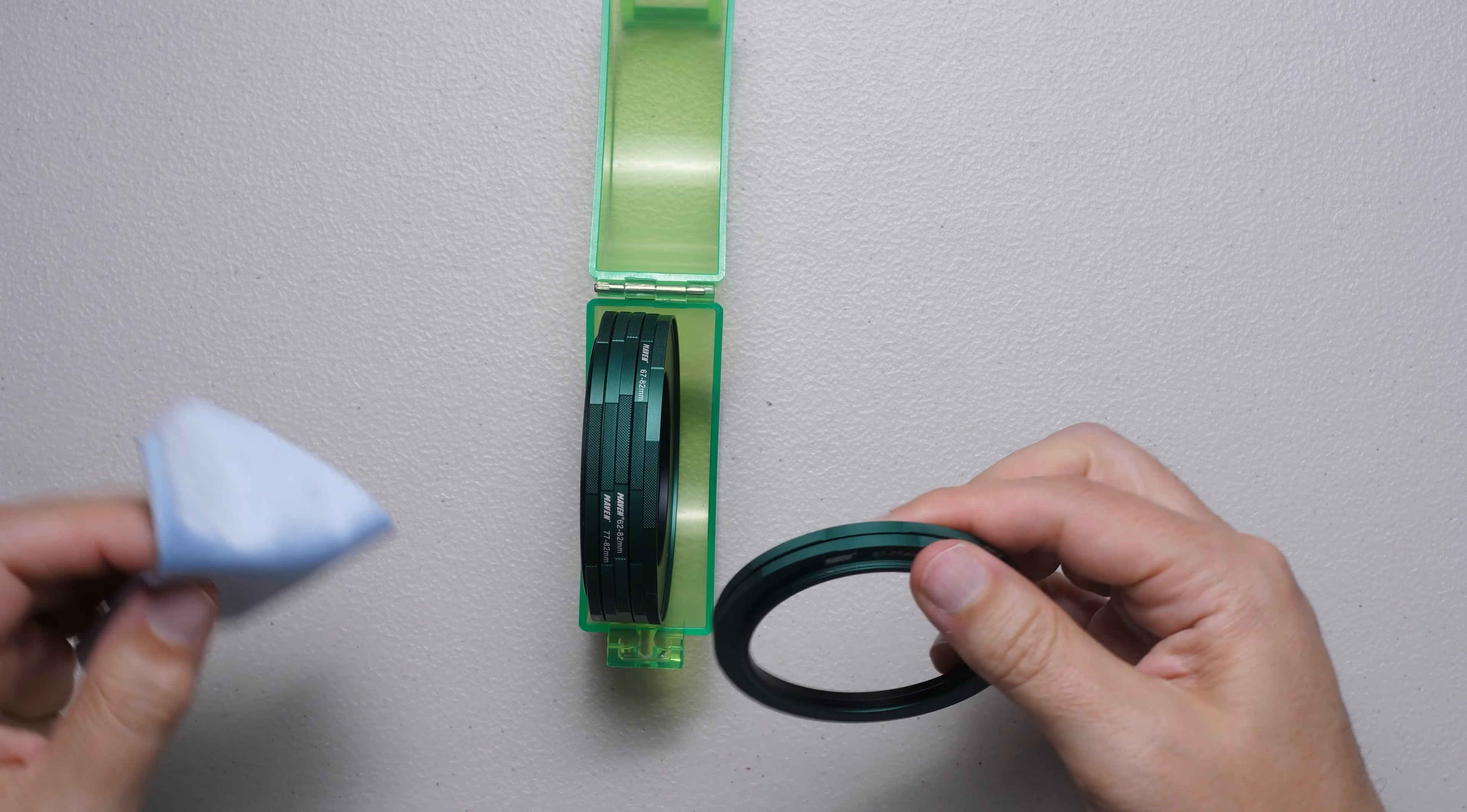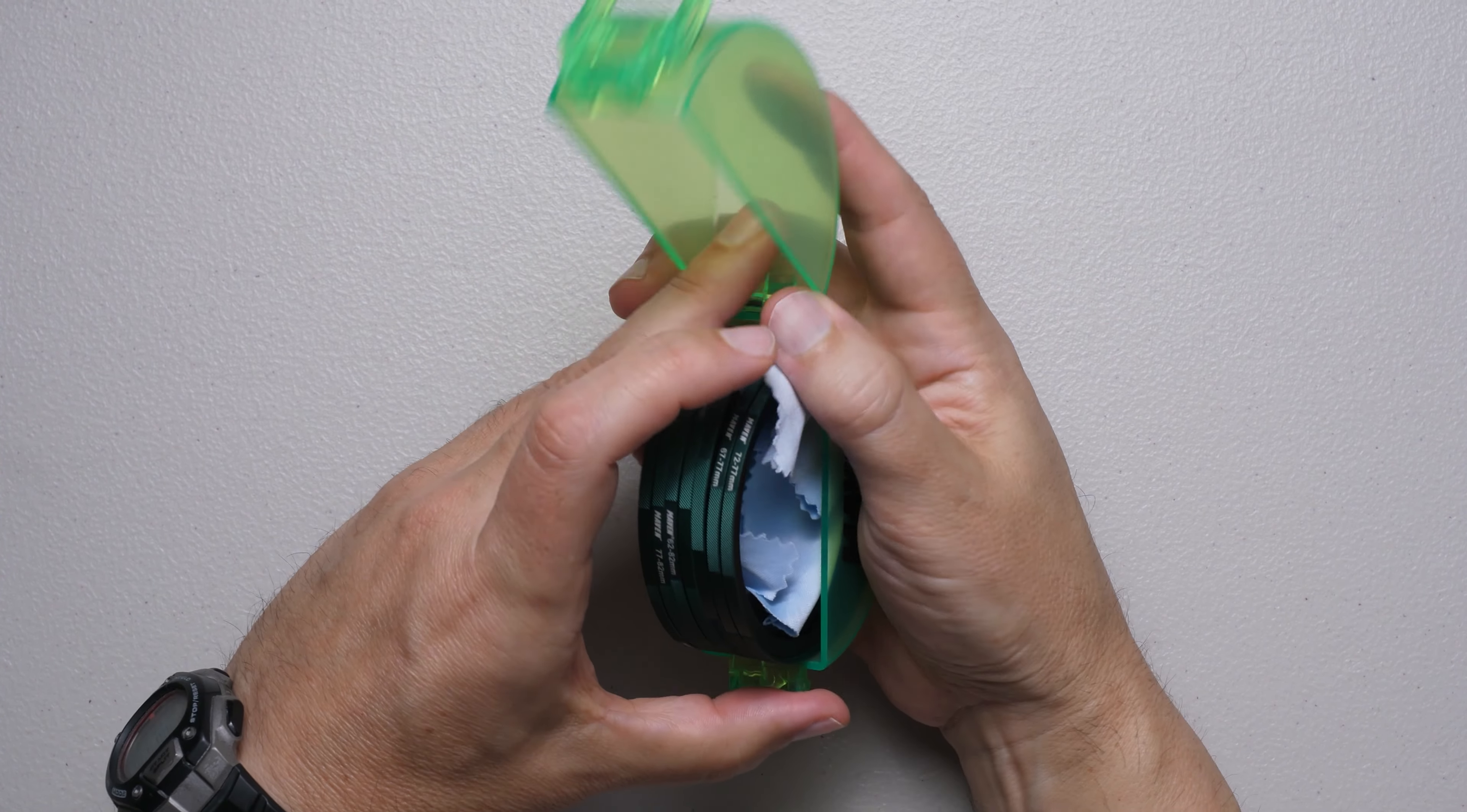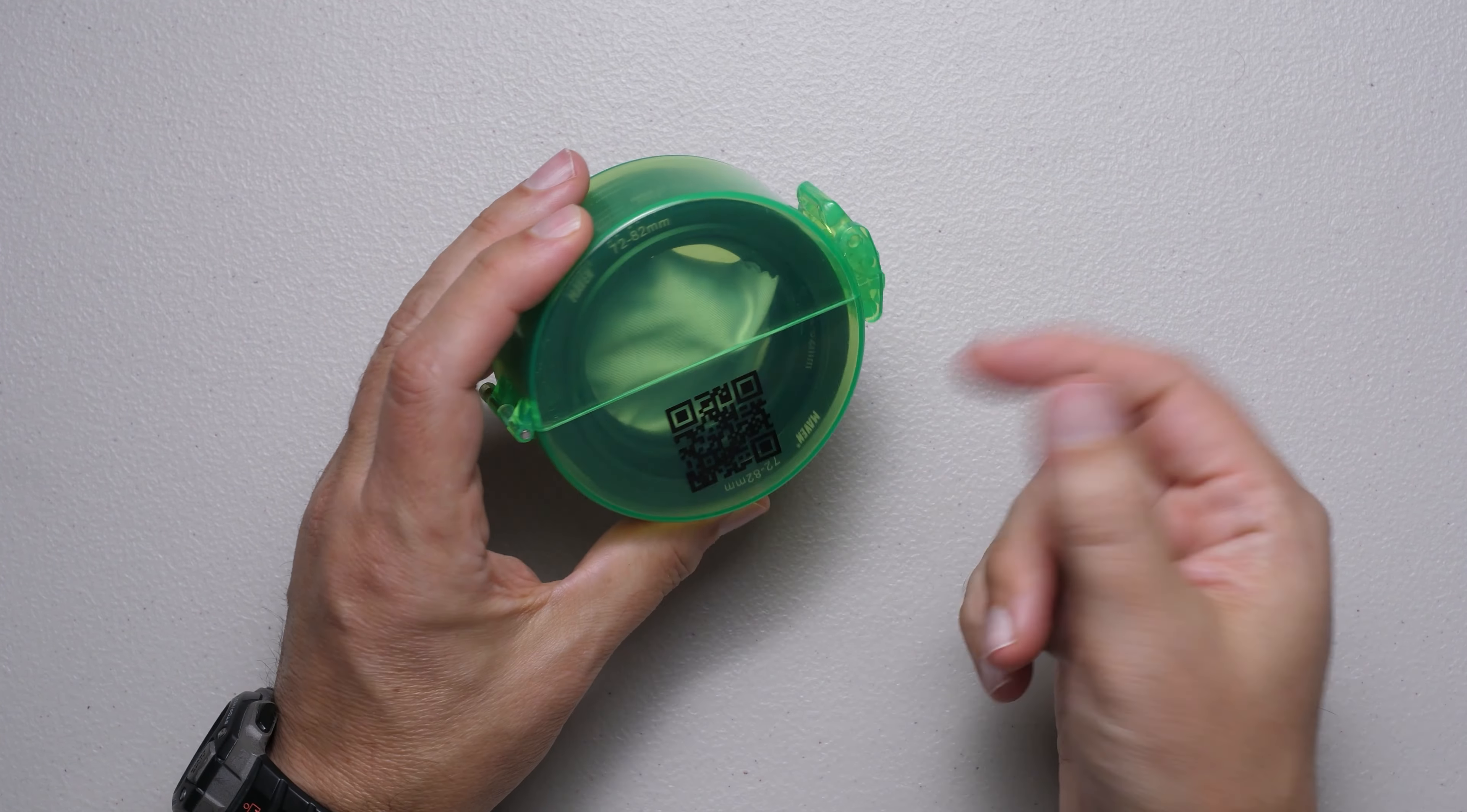In the event that I put different sizes in there, I also usually put a lens cloth between them. Just to separate it, prevent scratching and things of that nature, and then I close it. Now I have a place for all of my step-up rings, and I don't have to worry about where I put them or where to find them, because I know they're in the green case.